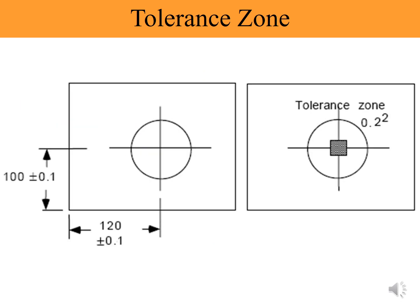The drawing shows a hole located from one of the corners at the lower left of the part. The vertical nominal value is 100 millimeters and horizontal nominal value is 120 millimeters. For both values, tolerances applied are plus minus 0.1 millimeters.